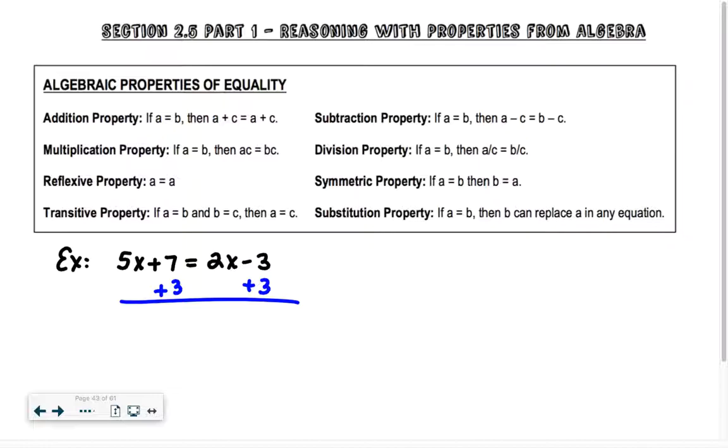Multiplication property, I can start with a statement and multiply by the same thing on both sides. Division property, I can divide by the same thing on both sides, as long as C is not equal to 0.